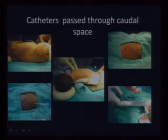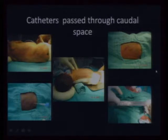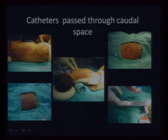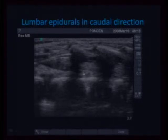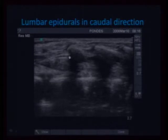How did we place caudal catheters? Continuous technique — we measured the distance from the caudal space to the thoracic level and did the needful, assuming the catheters reached where we wanted them to go. I have just shown you that you can actually see the catheter going all the way up. It's the same video.